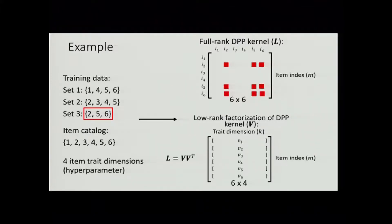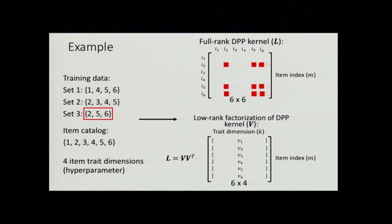To address issues around inference, we propose a low-rank factorization of L, simply defined in terms of a V matrix — the item trait matrix — where each row is an item trait vector. We can select the number of item trait dimensions to use as a hyperparameter. In this case, we have a six-by-four item trait matrix V, and L is defined as V times V transpose. This definition ensures that we have a positive semi-definite L matrix.